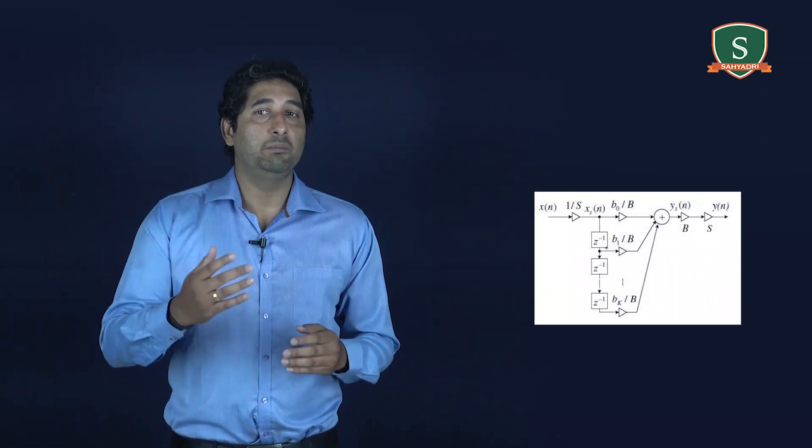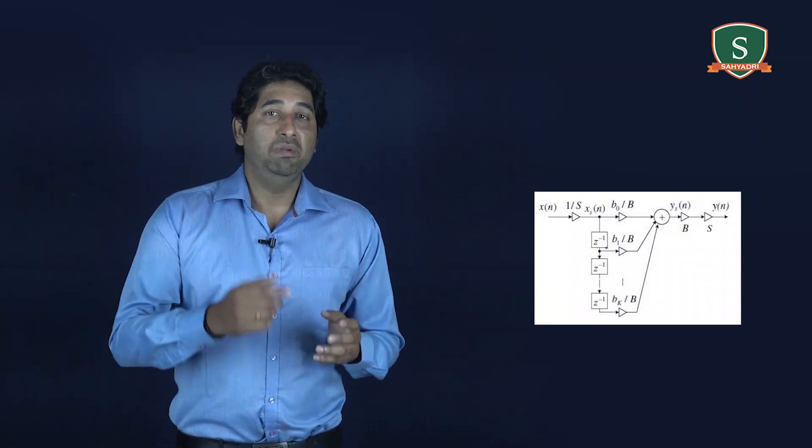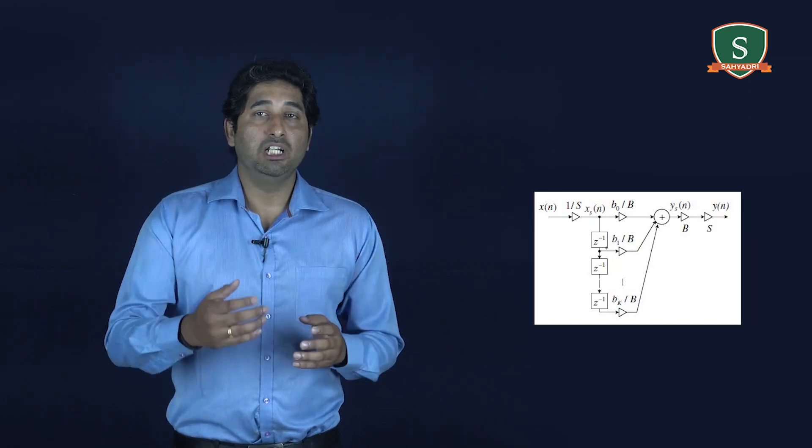The scaling factor B makes the coefficient BK divided by B convertible to the Q format. The scale factor S and B are usually chosen to be a power of 2, so the simple shift operation can be used in the coding process.